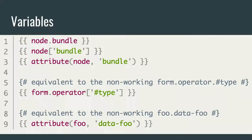In Twig syntax, two curly brackets in a row means you want to print something on the website. For example, in a node template, {{ node.bundle }} prints the content type machine name — article or basic_page. Twig is very flexible: lines one through three are all equivalent. You can use dot notation, which is most popular, or square bracket notation with quotations, or the attribute() function passing the variable and property. When a property starts with a hash sign you cannot use dot notation — you must use square bracket or attribute().